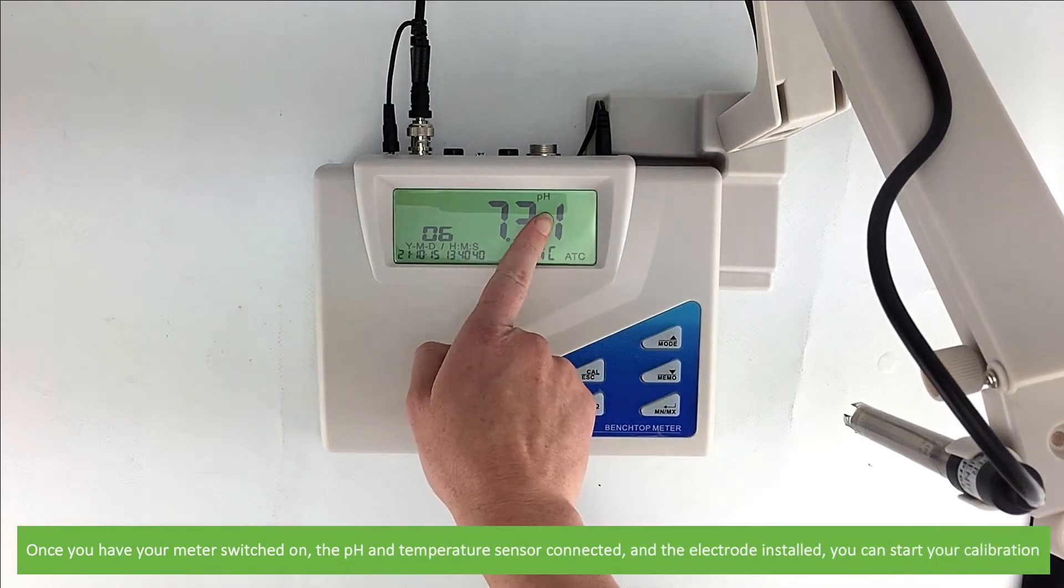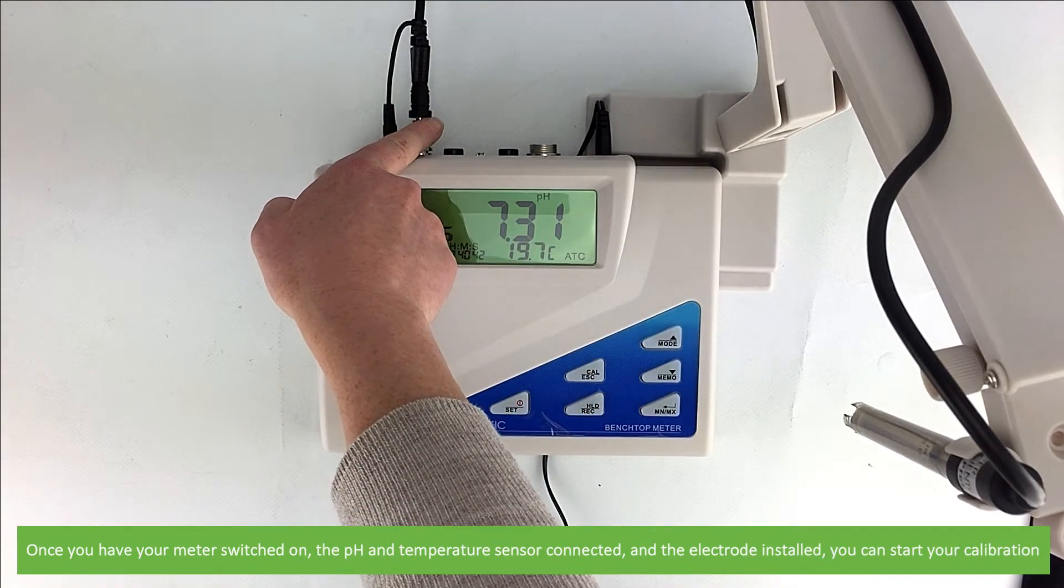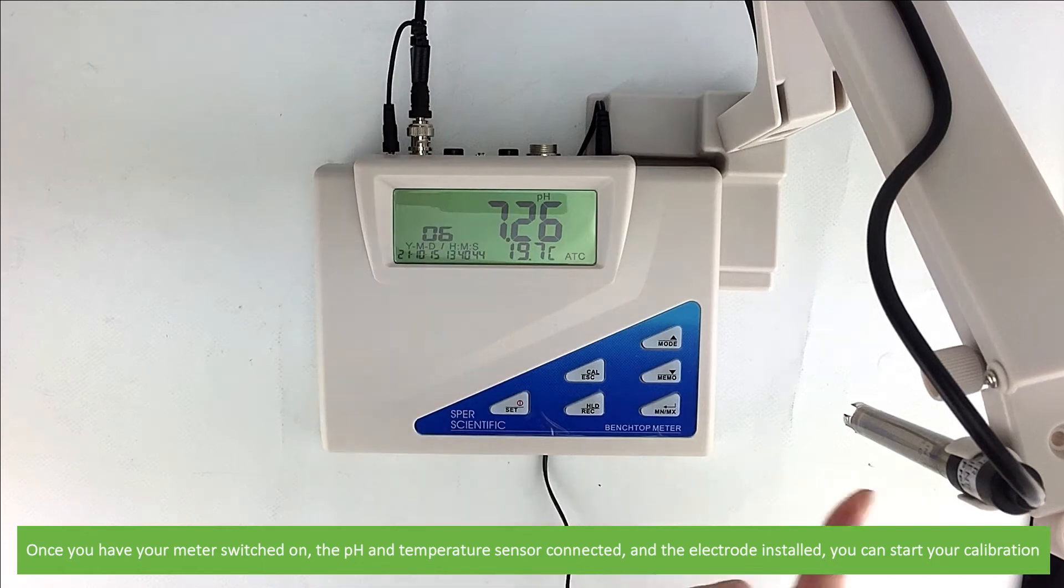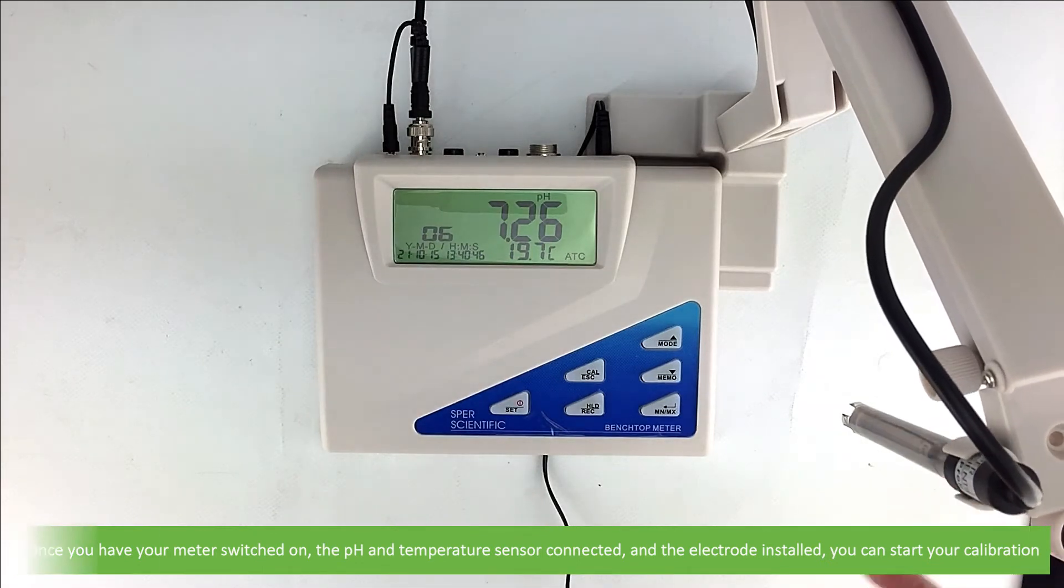Once you have your pH meter switched on, the pH and temperature sensor connected, and the electrode holder arm installed, you can start your calibration.